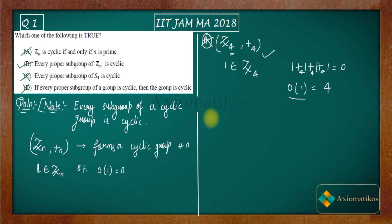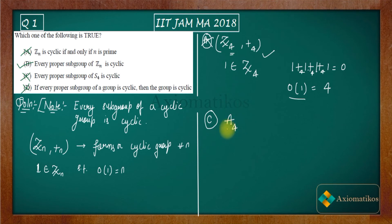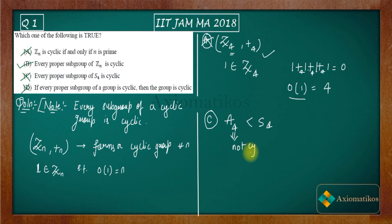Option C says every proper subgroup of S4 is cyclic. Consider the alternating group A4, which consists of only even permutations. It is a subgroup of S4, and it is not cyclic. So that is the counter-example for C, and therefore C is incorrect.